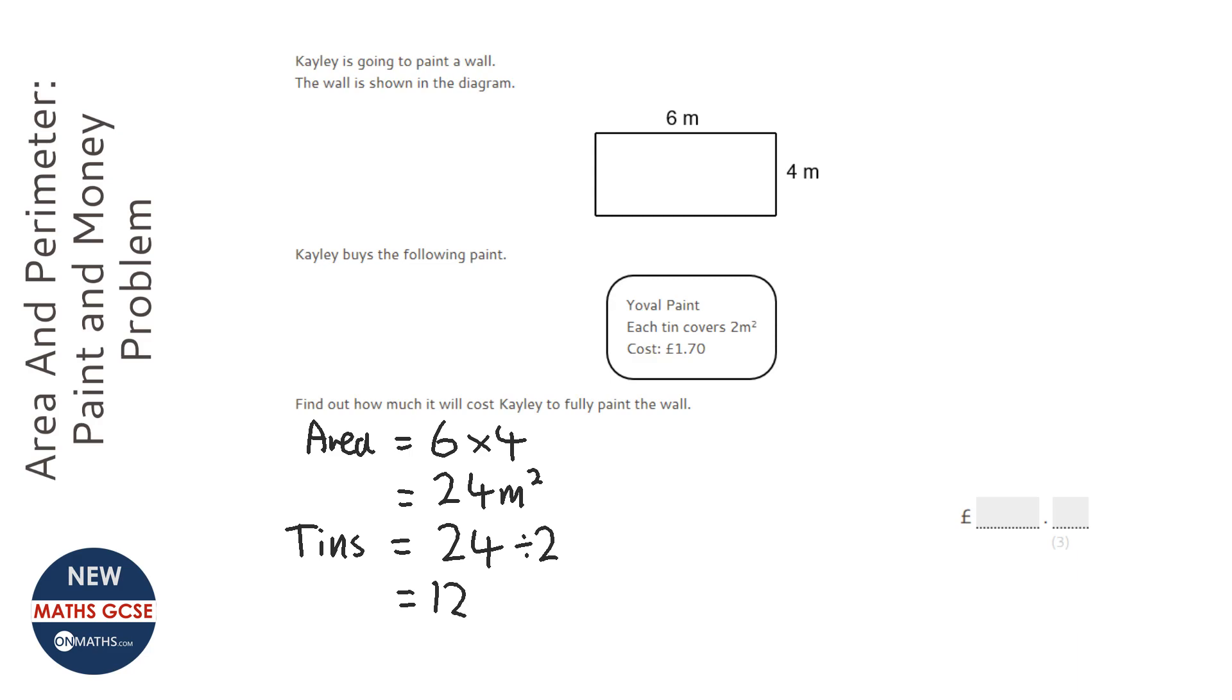Now it says the cost of each tin of paint is £1.70, so we're going to work out the total cost by doing 12 times 1.7, or £1.70. So 12 times 1.7 is 20.4, and just remember in money you need to have it to two decimal places, so it's £20.40.